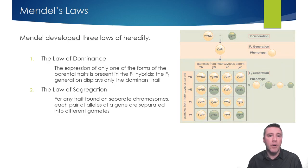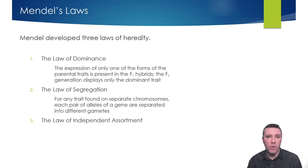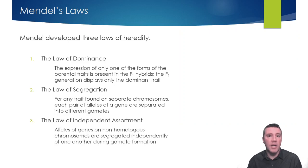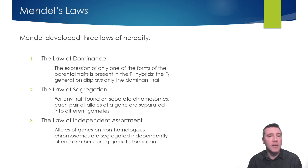Mendel's third law is the Law of Independent Assortment. This law states that the alleles for separate traits on non-homologous chromosomes are passed independently of one another during gamete formation. That is to say, the probability of passing on an allele for one trait has nothing to do with the selection of an allele for any other trait on a different chromosome.